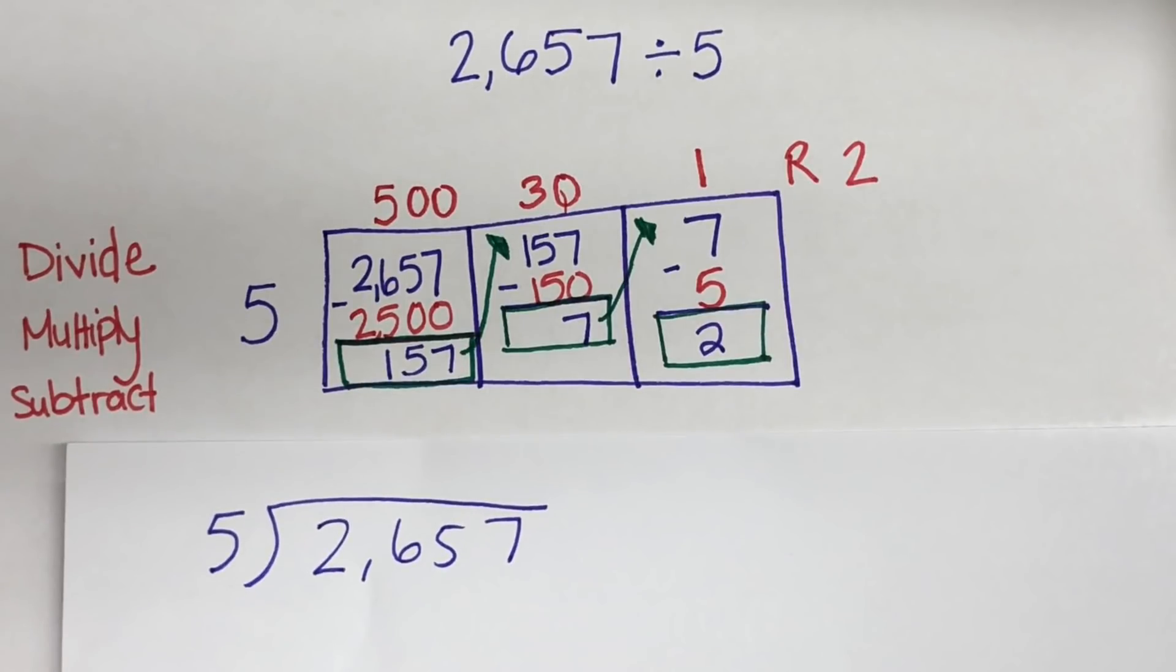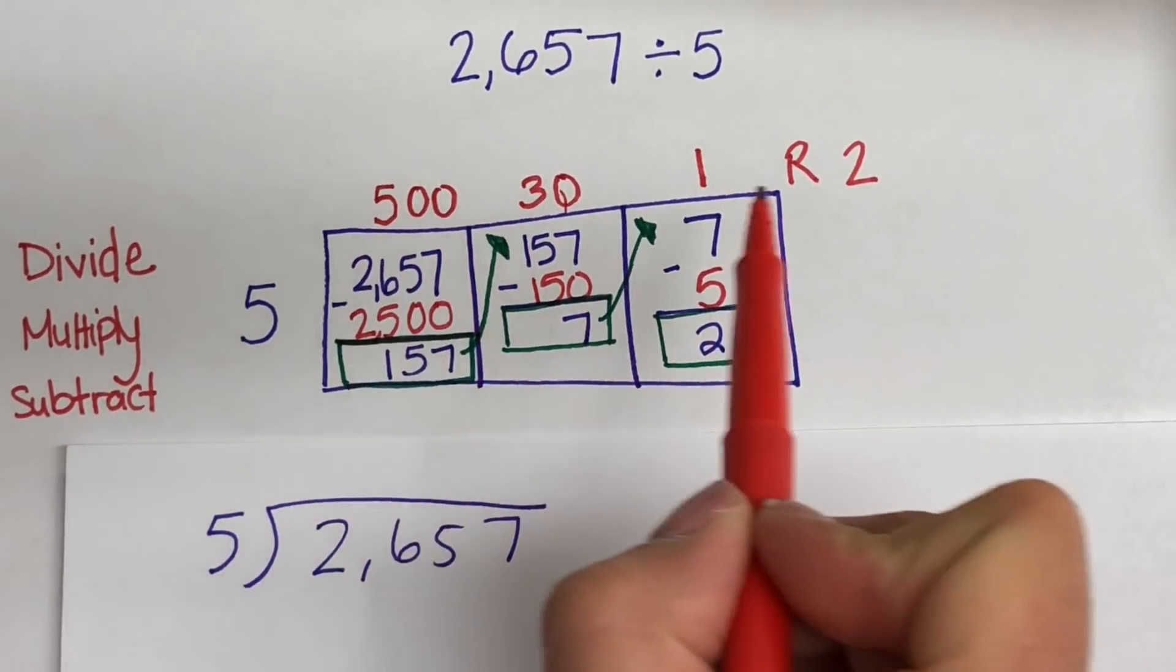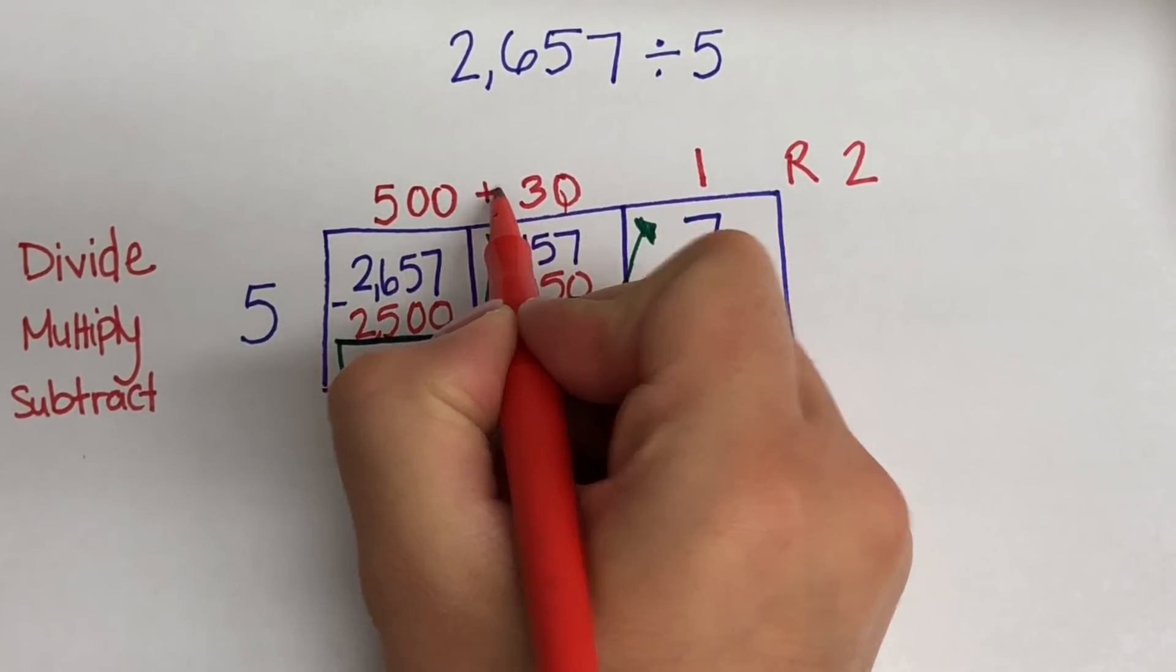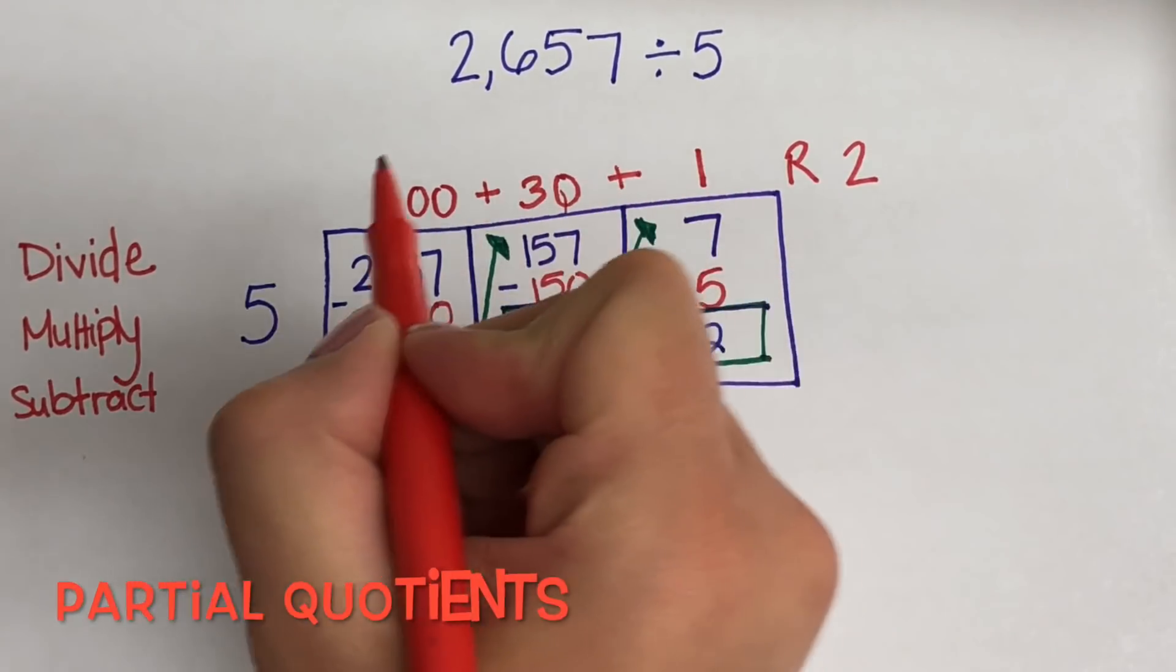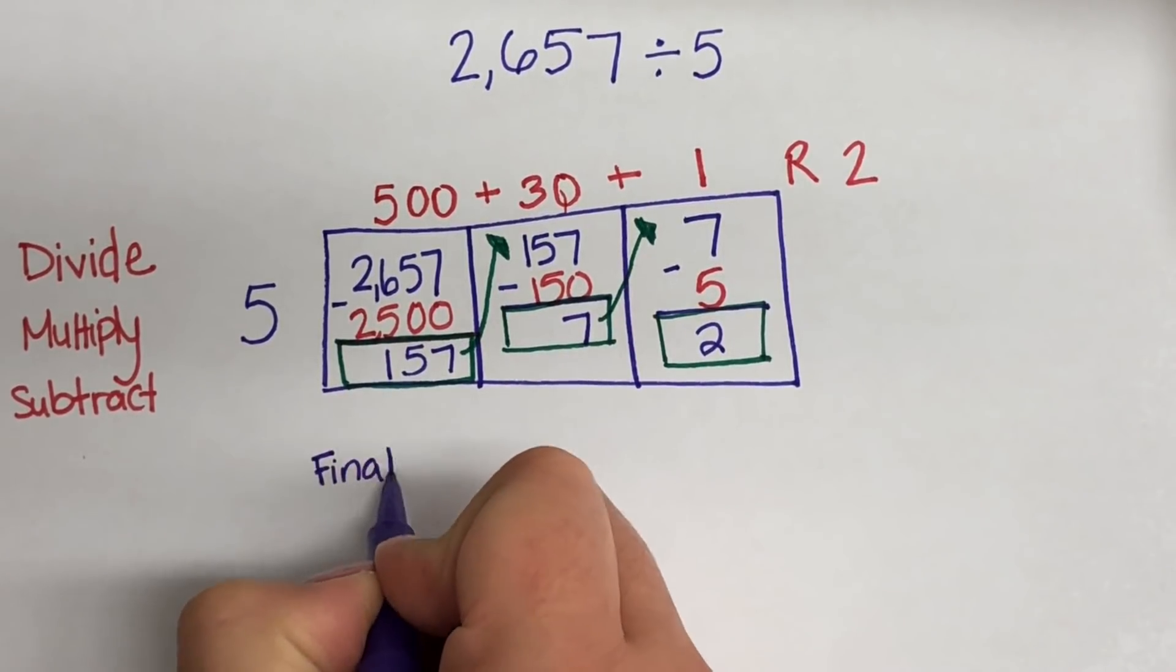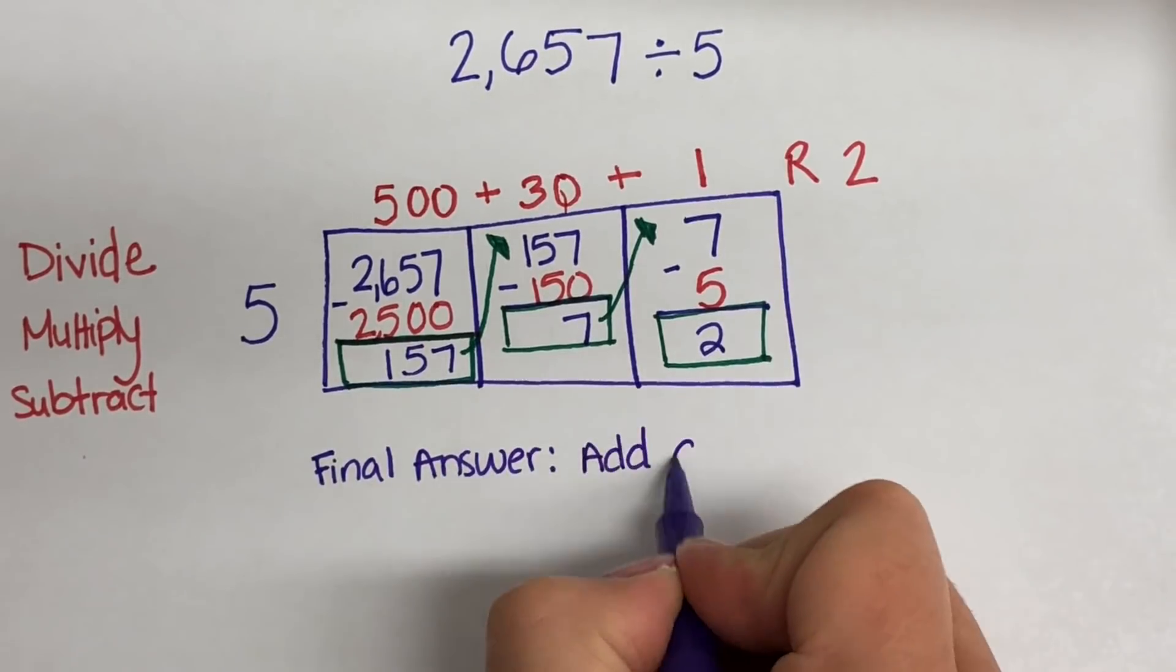So now let's look back at this example here. This is the same problem written in your standard division way. And if you were to do it the long division way, where would the answer go, everybody? I think I heard some of you say it. The answer goes on top. It would go on the top of this sometimes called house. So let's look at the top of our rectangle. And on the top of our rectangle, we have 530 and 1. And we are going to add those numbers together. Because these are what we call partial quotients, which means they are part of the quotient. So we add them all together to get our final answer or our final quotient.